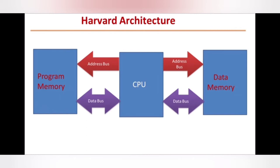Let's look at the Super Harvard architecture to understand why the processing speed is higher. The SHARC — these are the famous DSP controllers that have been used in the industry. Here in the CPU, they have one instruction cache memory.